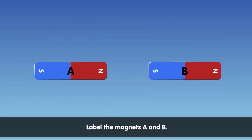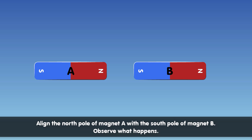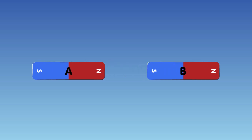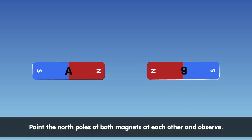Label the magnets A and B. Align the north pole of magnet A with the south pole of magnet B. Observe what happens. Point the north poles of both magnets at each other and observe.